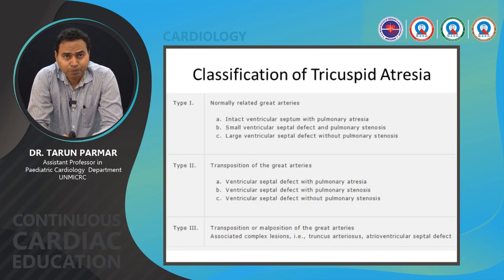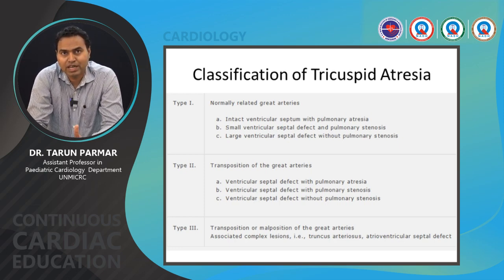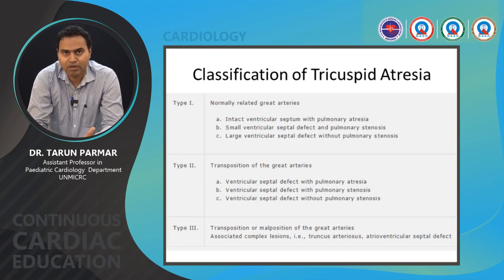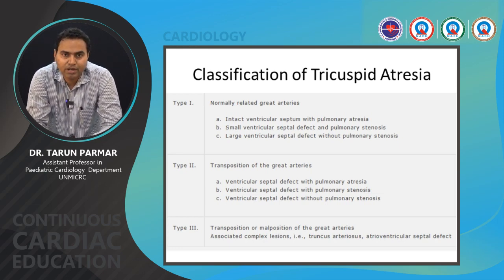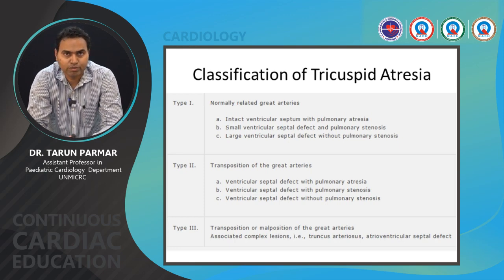Type 1A means pulmonary atresia with an intact interventricular septum. Type 1B means pulmonary stenosis, which can occur at the VSD level, infundibular, pulmonary valvular, or supravalvular level. Type 1C has a large VSD with no pulmonary stenosis and well-developed pulmonary arteries — a pulmonary overcirculation situation. In Type 2, a VSD is usually present; Type 2C is the most common variant, with no pulmonary stenosis but can also occur with pulmonary atresia or varying degrees of pulmonary stenosis.